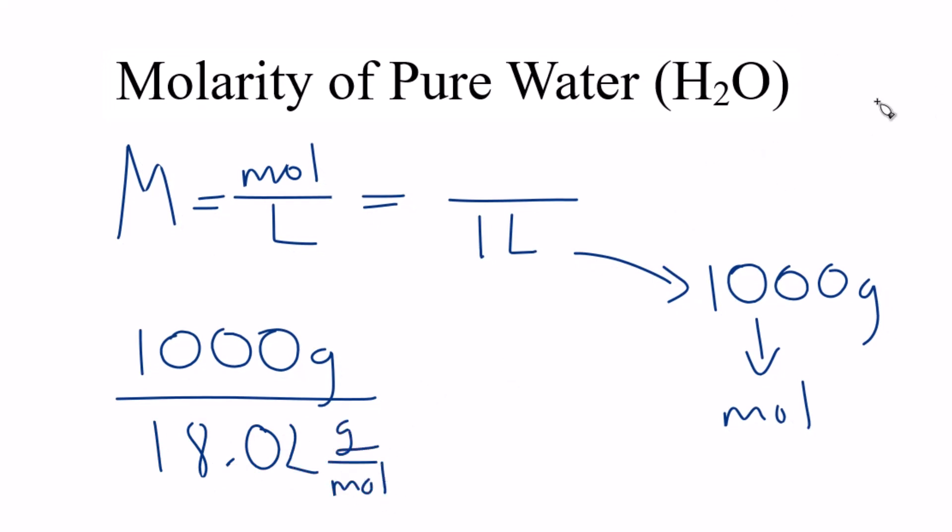If you need help finding the molar mass for water, there'll be a link at the end of this video. So we have grams on the top and the bottom, they cancel out. We're going to divide 1000 by 18.02, and we end up with 55.49, and the units are going to be moles here.